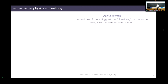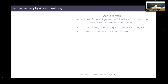Active matter studies assemblies of interacting particles — often living particles that consume internal energy to drive self-propelled motion. I'm an active particle because I can choose to move in a given direction; this is very different from gas particles, which can't spontaneously decide to move another way. These systems are not described by standard equilibrium statistical physics, so we need new physical and mathematical tools to understand their dynamics, and they often exhibit emergent collective behavior with no equilibrium counterpart.